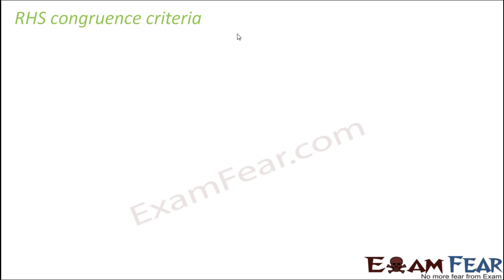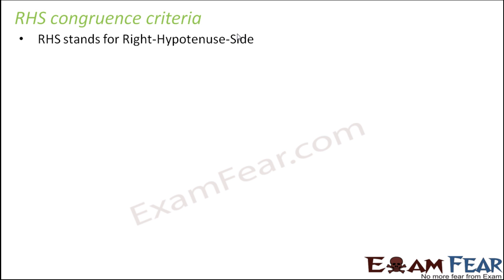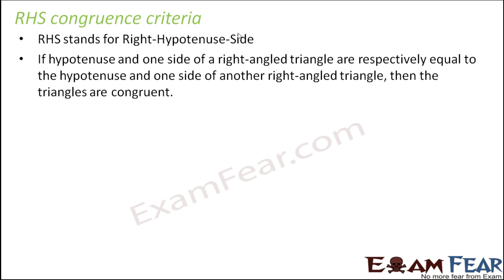This is a special congruence criteria that holds true only for right angle triangles. RHS stands for Right, Hypotenuse, Side. Let us see how we make use of this RHS criteria for right angle triangles.